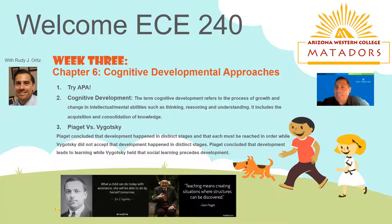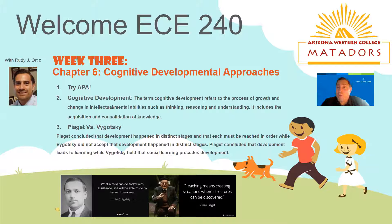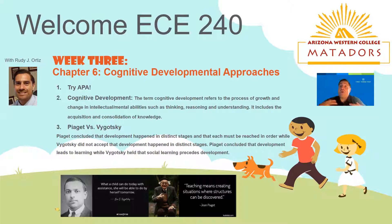You started by learning the different theorists that talk about developmental stages, and you got to pick which one you related to the most. You also learned about the importance of that 90% of critical brain development happens right before a child hits kindergarten, by the time they hit age five. You learned the difference between nature versus nurture and the important role we as adults play in nurturing our children all the way through.